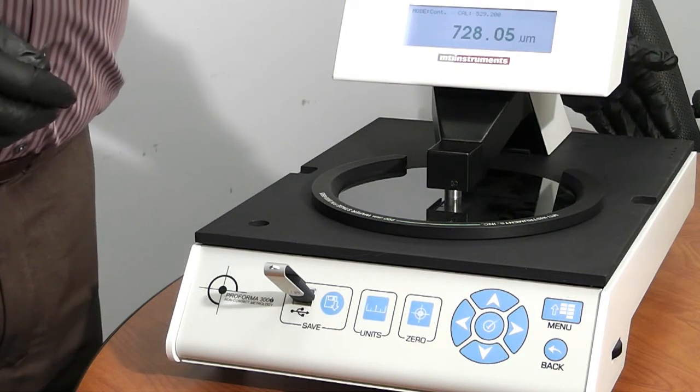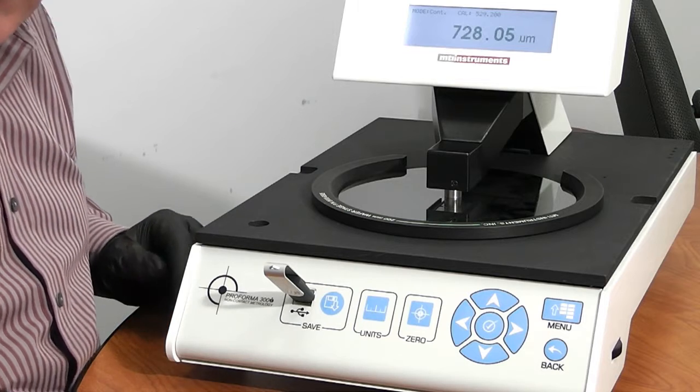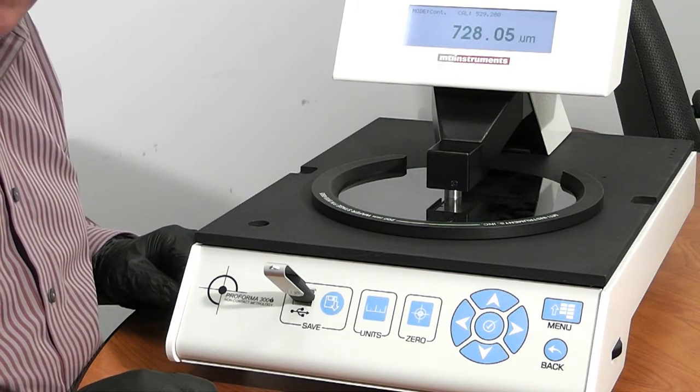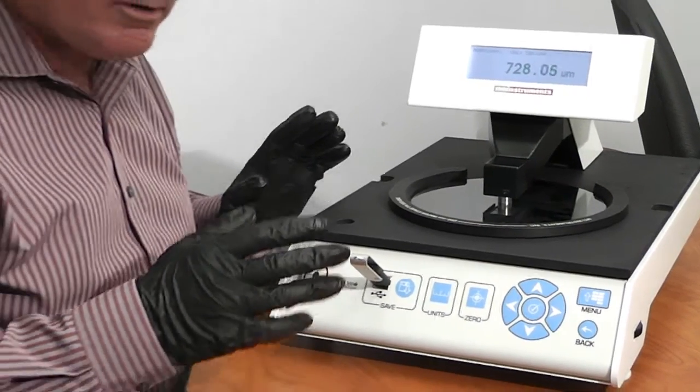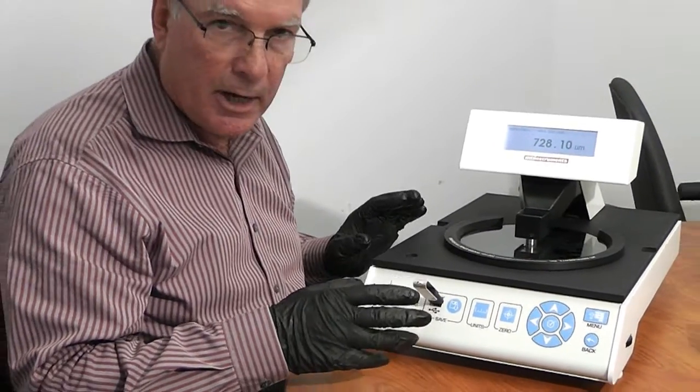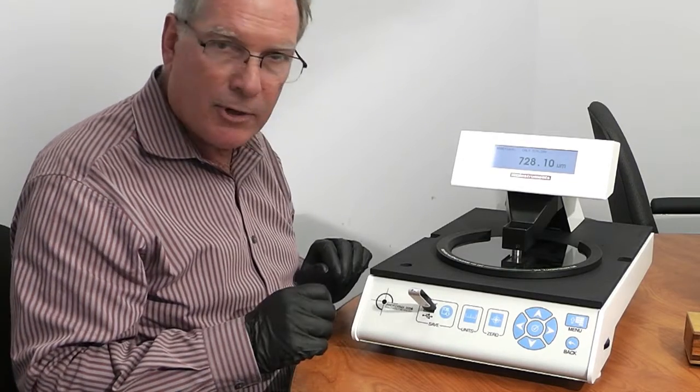Additionally, on the back, we have an Ethernet interface, and that Ethernet interface will allow us to communicate over a network or with another computer and also store that data, and we can remotely control the Proforma 300i via that network for a little bit of automation here. We'll save that for another video.